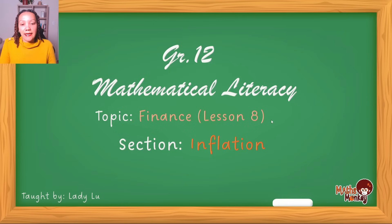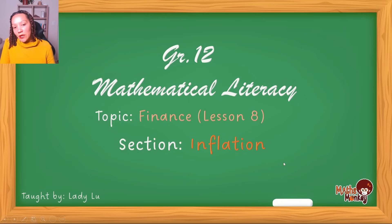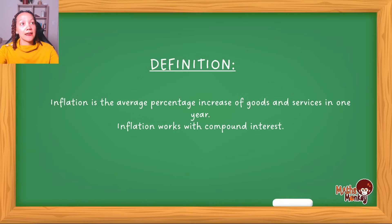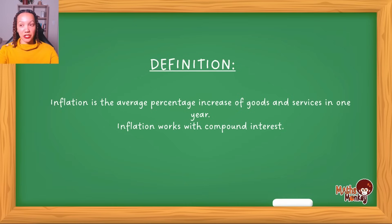So this lesson is on inflation and I like to start by making sure that you actually understand the definition of the topic. Inflation is the average percentage increase of goods and services in one year. Inflation works with compound interest — essentially a country will have standard prices and then each year those goods and services will increase by a specific percentage, and that percentage is known as inflation.